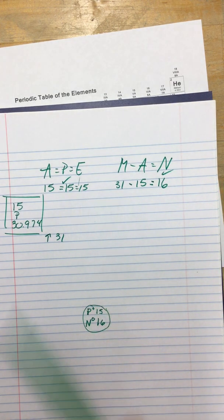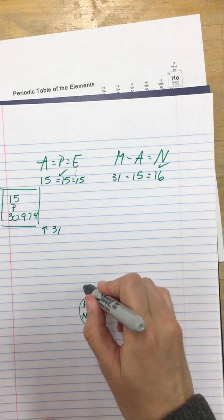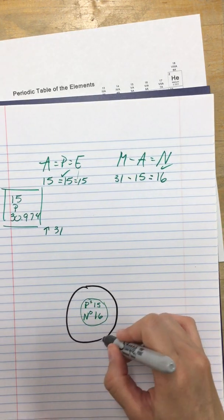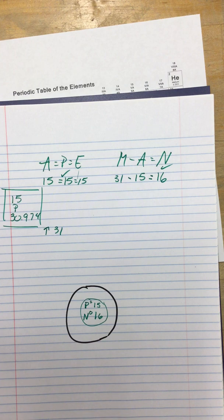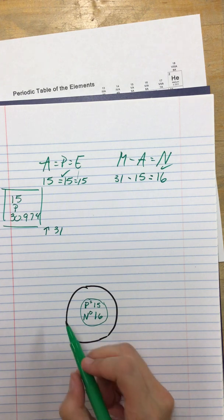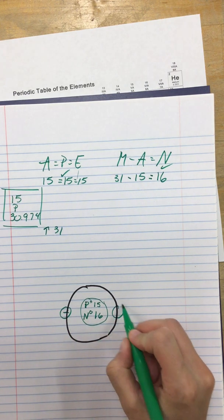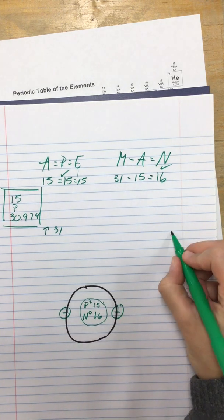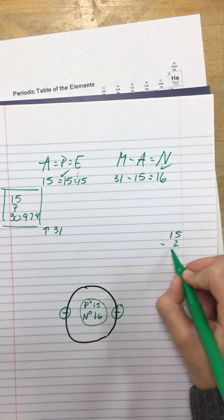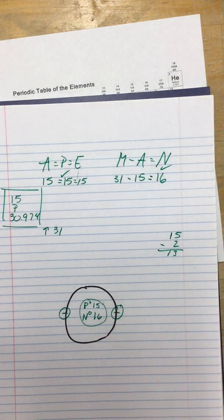Now, I can go through my electrons. So, first things first, I need a ring. Remember, the inside ring can only hold two electrons. One, two. But I have 15 total. Meaning, I still have 13 electrons to do. So, I need another ring.